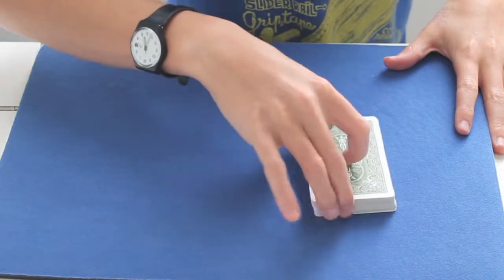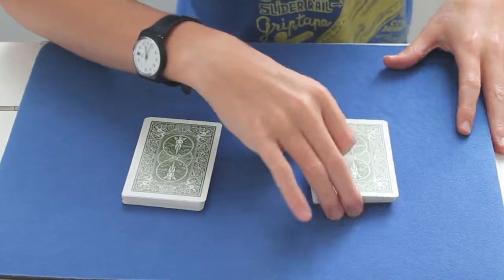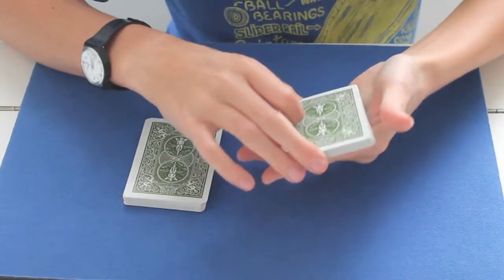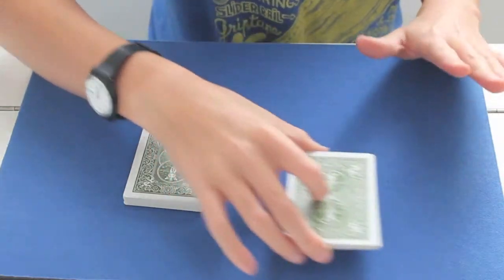And now I'll ask them to cut the deck in half. Like this for example. And they will hold this in their hand. But as I don't have any spectators, I'll just leave it there on the side.